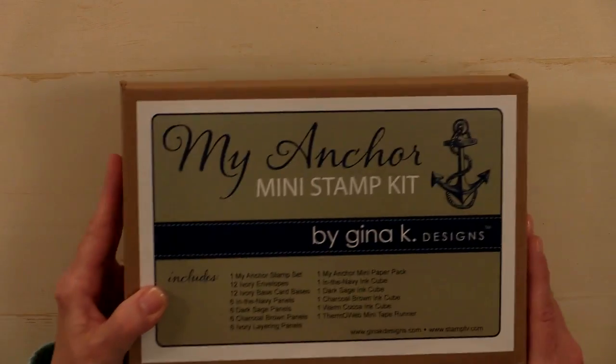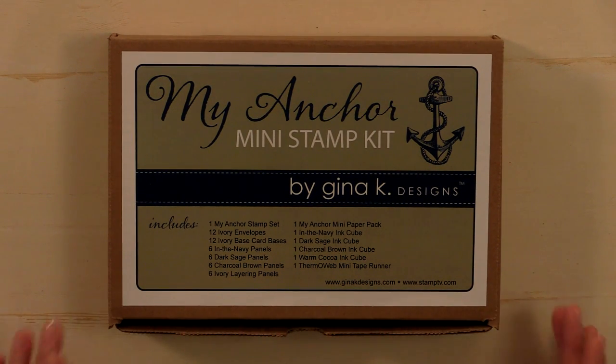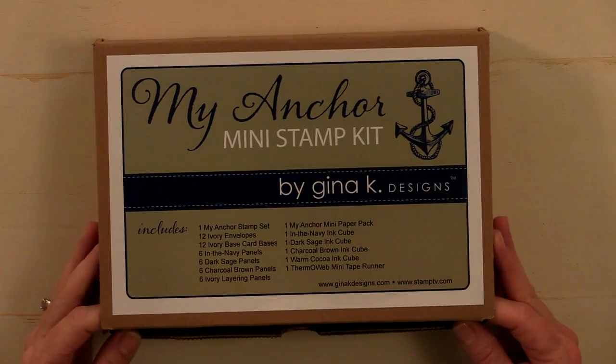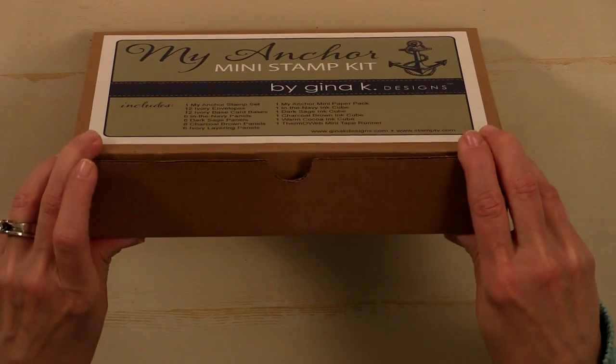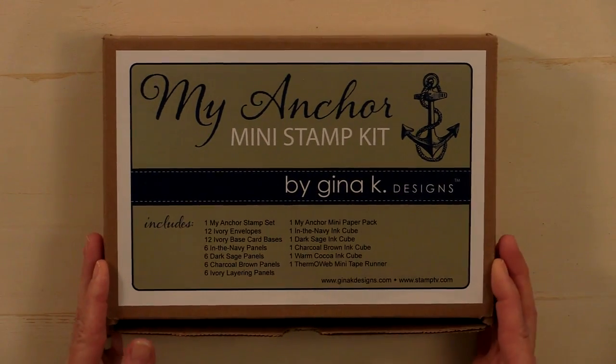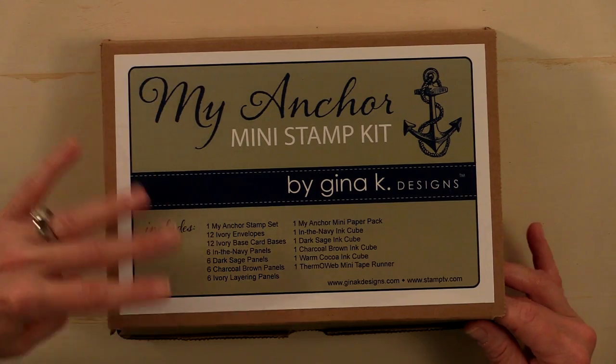Now I want to show you the new mini kit. This kit is perfect for all the gentlemen in your life. It's called My Anchor and it's filled with beautiful stamps, patterned paper, cardstock and ink that will help you create elegant masculine cards. Let me show you what's inside. First, it comes in this nice storage box. It's nice and sturdy and you can put a little label on the side and keep all the components of this kit together so that you can stamp along with me when I make videos featuring this kit.